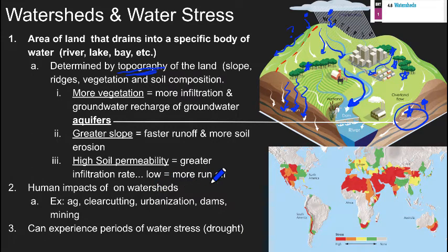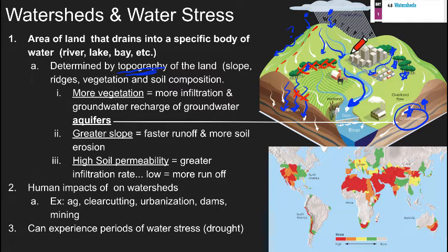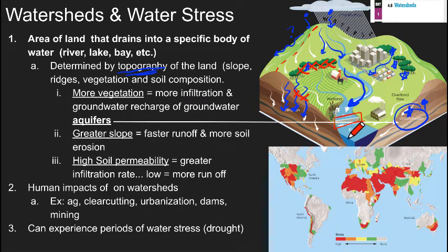Human impacts on watersheds include clear-cutting — if we remove a forest, we obviously recharge less water into the aquifer. Urbanization means more concrete, which runs off more water farther away. A dam will hold water back but prevent water from moving downstream, affecting watersheds in those areas. And mining can lead to more water use and more polluted water. We'll save the pollution discussion for later in the year.